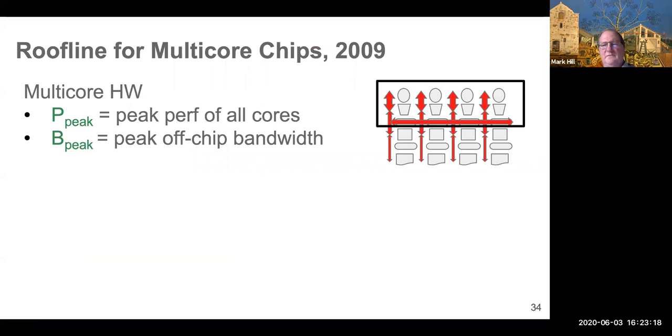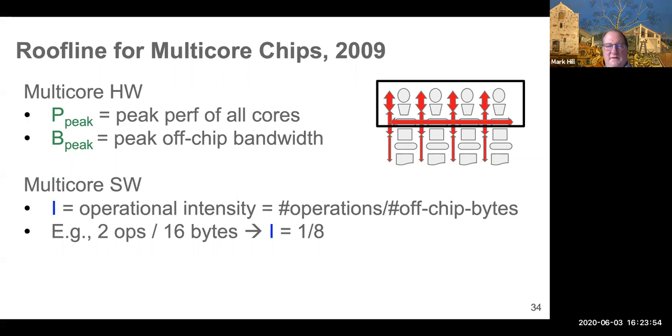So first we're going to build on Roofline. So Roofline takes all the blood, sweat, toil, and tears of hardware designers designing a homogeneous multiprocessor with identical CPUs and boils it down to two numbers. There's the peak performance of all the cores running flat out, no synchronization, no bottlenecks. And there's the peak bandwidth off chip, not even making a distinction between whether you're bringing things on or off chip or whether the DRAM page is open or closed. So all hardware boiled down to two parameters.